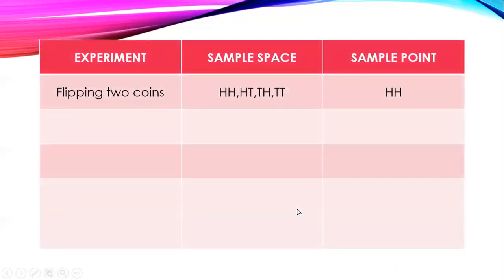Let's have an example. We have experiment, sample space, and sample point. Experiment: flipping two coins. Sample space: head-head, head-tail, tail-head, and tail-tail. Sample point: just one possible outcome, so sample point could be HH or head-head.